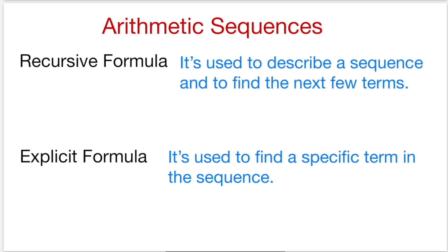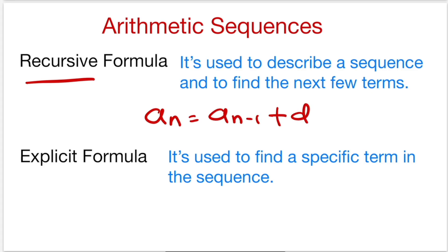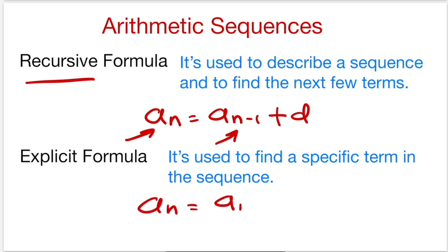My recursive formula is: a sub n equals a sub n minus 1 plus d, where a sub n is my nth term, a sub n minus 1 is the previous term, and d is my common difference.